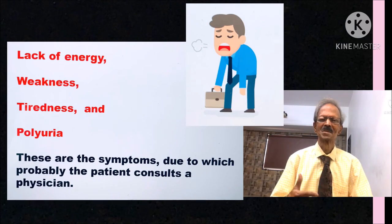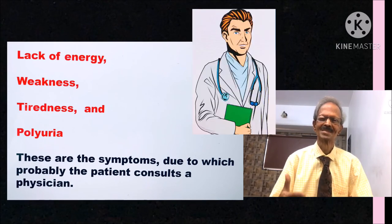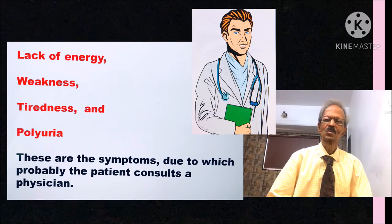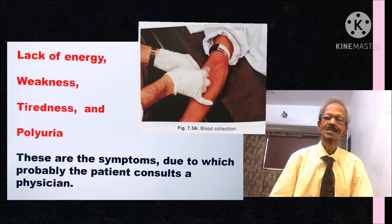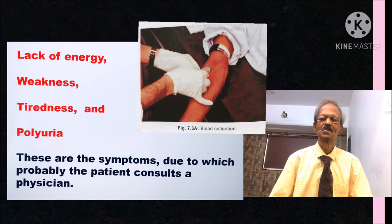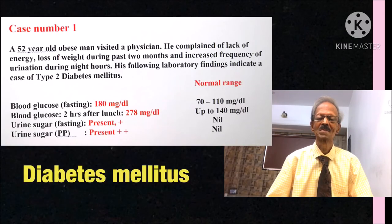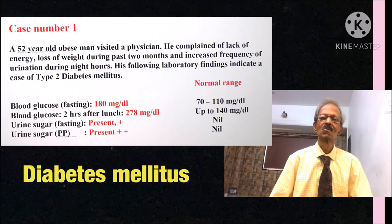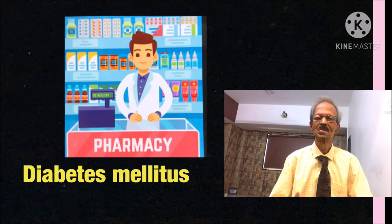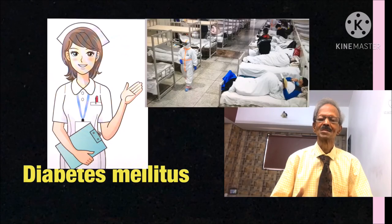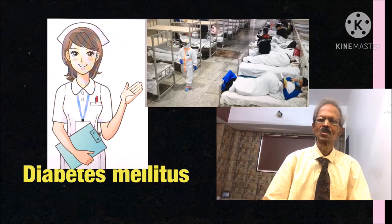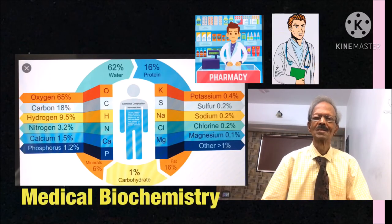In a normal person's urine, glucose is usually not detected. Due to these symptoms, the patient visits a physician. To confirm the diagnosis, the physician directs them to a clinical laboratory, and pathologists, biochemists and laboratory technicians test the blood and a report is obtained. From the report, the physician diagnoses the case as diabetes mellitus, and by consulting a pharmacist, uses appropriate drugs to treat the patient. In hospitals, nurses monitor the patient as per guidelines given by the physician.